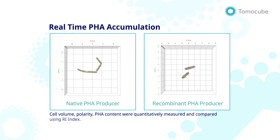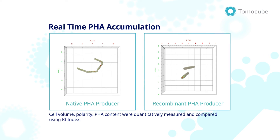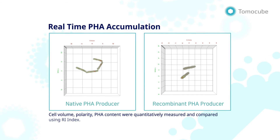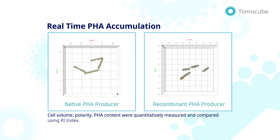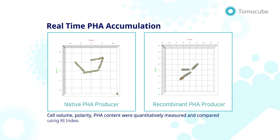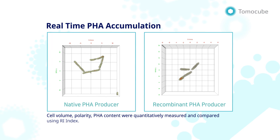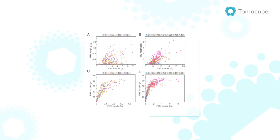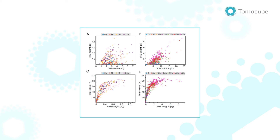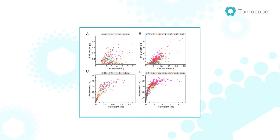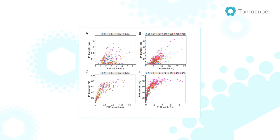In this research paper, PHA accumulation was quantitatively analyzed and compared between native and recombinant PHA-producing cells. As a result, the PHB granules' volume, content, density, and localization were compared between native and non-native producers of PHB.